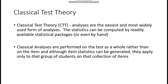Classical analysis are also performed on the test as a whole, so it is somewhat holistic rather than on the item. Our index of difficulty and index of discrimination are actually item statistics, but they only apply to that group of students on that collection of items — meaning they are dependent on the respondents or the sample. If we administer that test to a different group, even using the same items, we might arrive at different results. But if applied to students with similar characteristics to those we pre-tested, there is a possibility the findings will be similar.